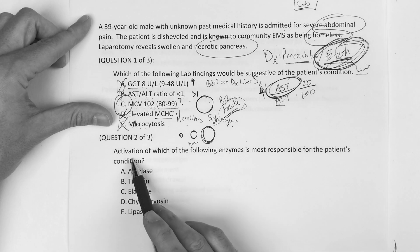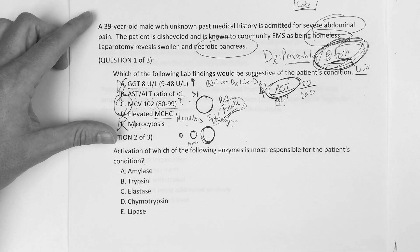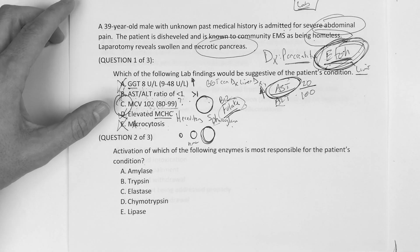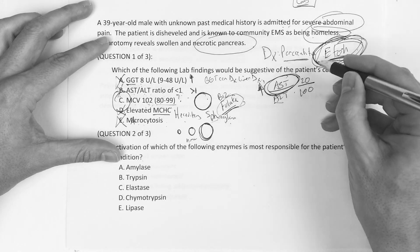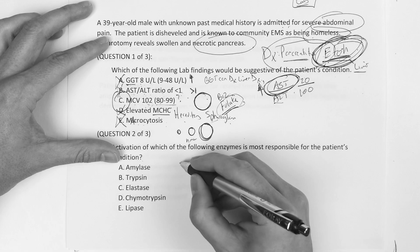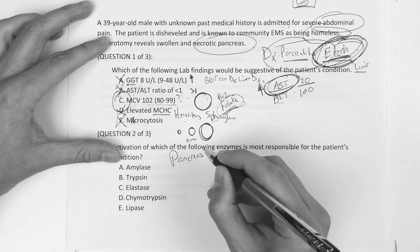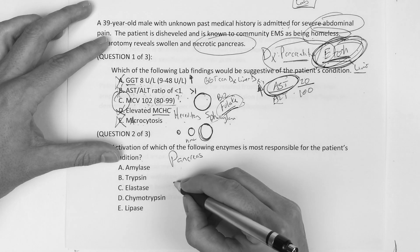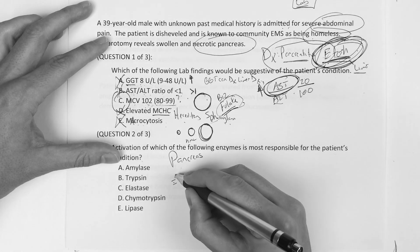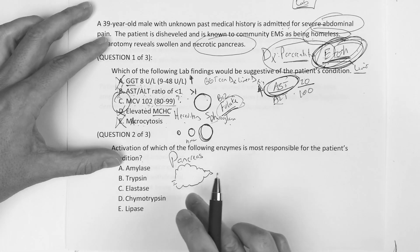The second question asks: activation of which of the following enzymes is most responsible for the patient's condition? This is the key learning point for this video - we have to understand the basics of the pancreas. You're trying to tell a story, starting at the mouth and working your way down. We're now at the pancreas.